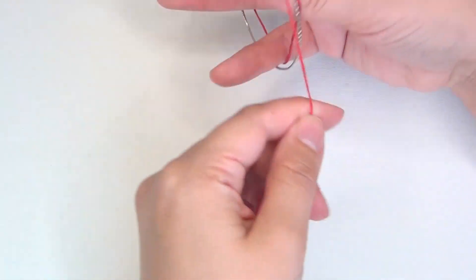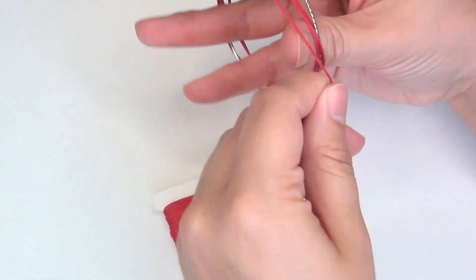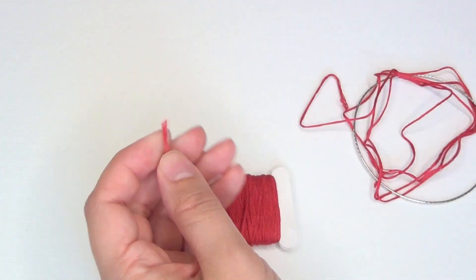Begin by taking your bangle and measuring your first color of embroidery thread five times around the bangle. This doesn't have to be an exact measurement, you just want to make sure you're not going to run out of embroidery thread.